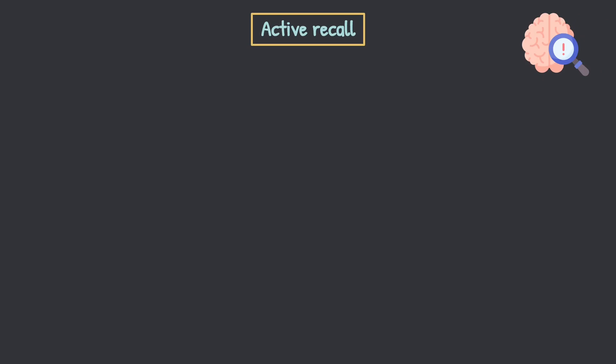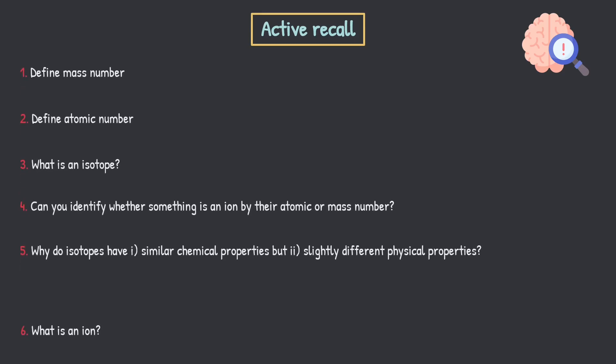Now some time for some cheeky active recall — this is so important. Active recall combined with past paper questions is going to boost your grade so much. We've got a list of six questions here. Pause the video and do your best. Get a scrap piece of paper, write some notes, or say it out loud. Writing it down is best because it concretes it in your brain a little bit more. Remember what you've just learned from this video and apply it to some active recall.